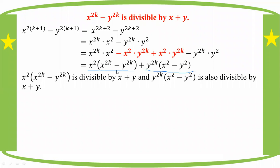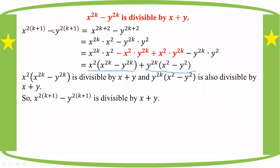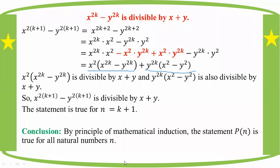Therefore a squared times x to the power 2k minus 1 to the power 2k is divisible by x plus y. Hence the expression is divisible by x plus y. By the principle of mathematical induction, the statement is true for all natural numbers n. This completes the proof.